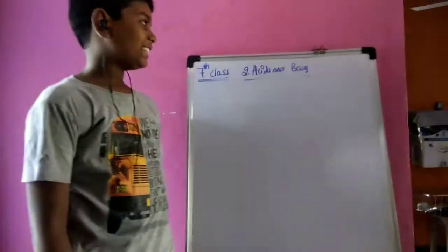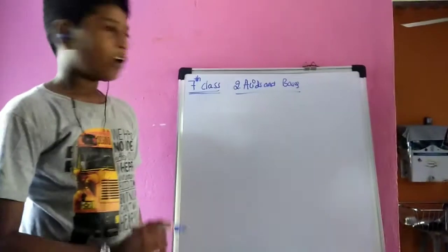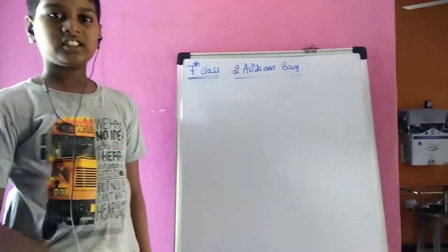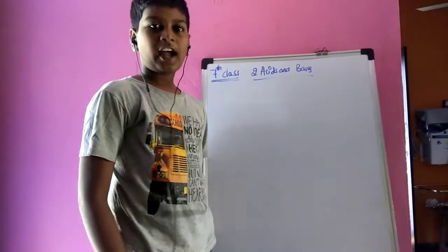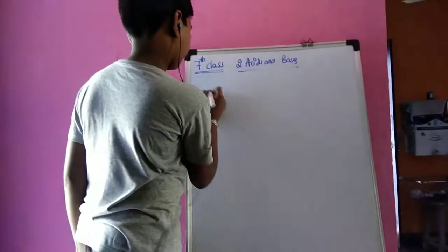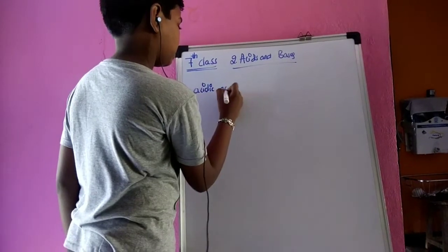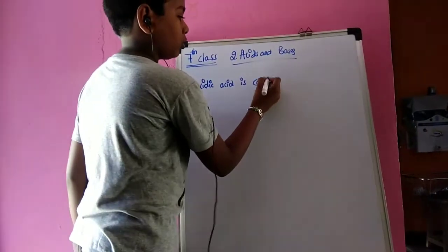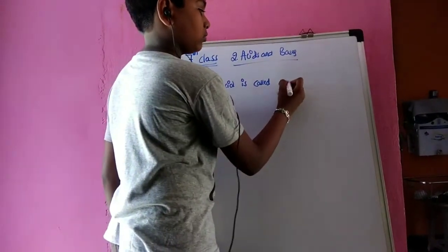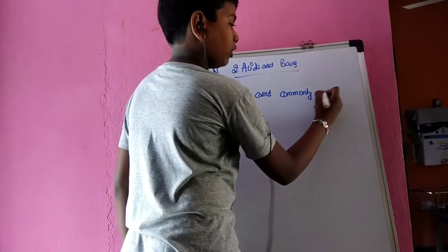Hi guys, welcome to Kitty Studies. This is Part 2 of Acids and Bases of 7th class science second unit. Ethanoic acid is commonly called vinegar.